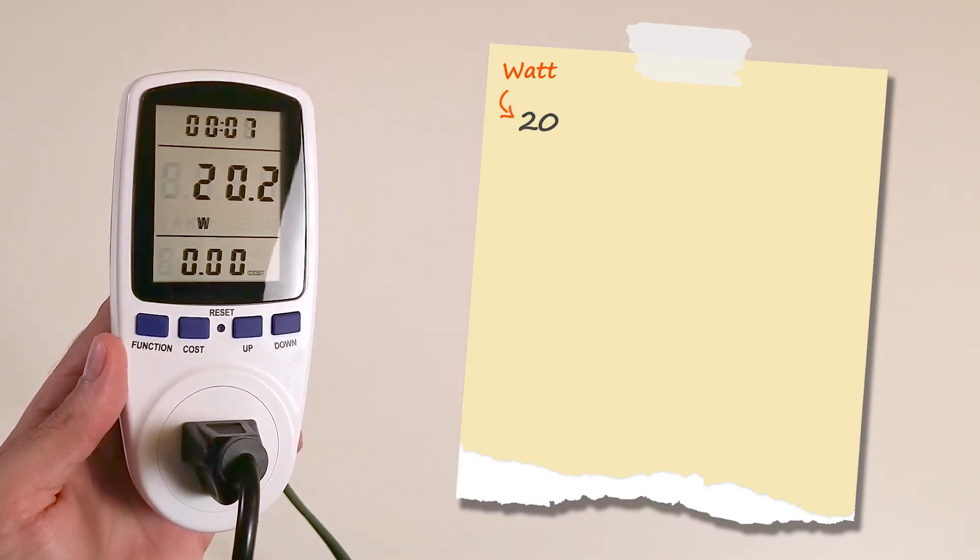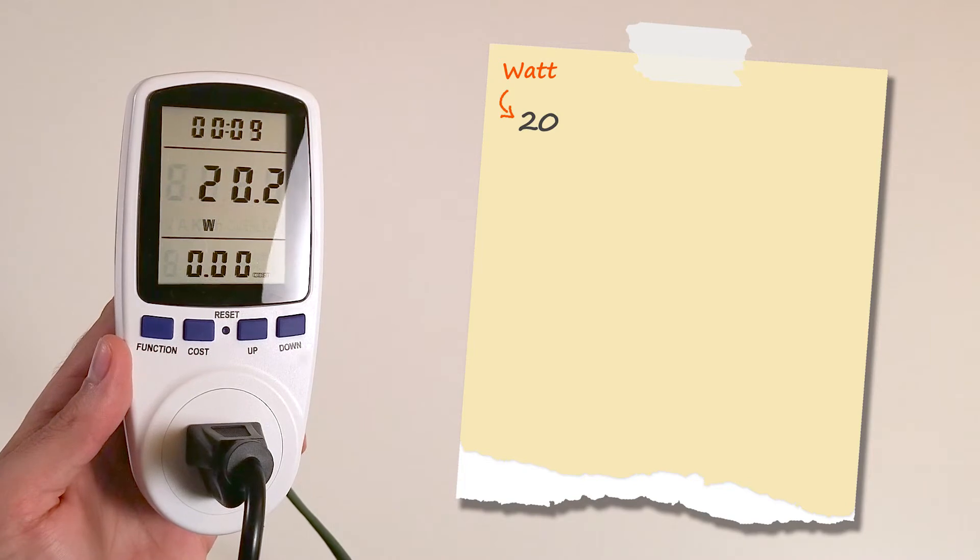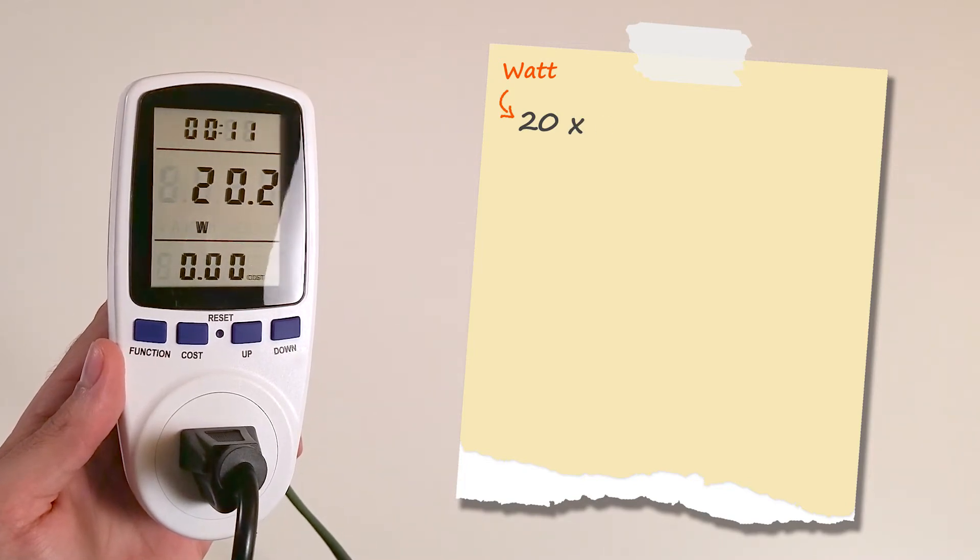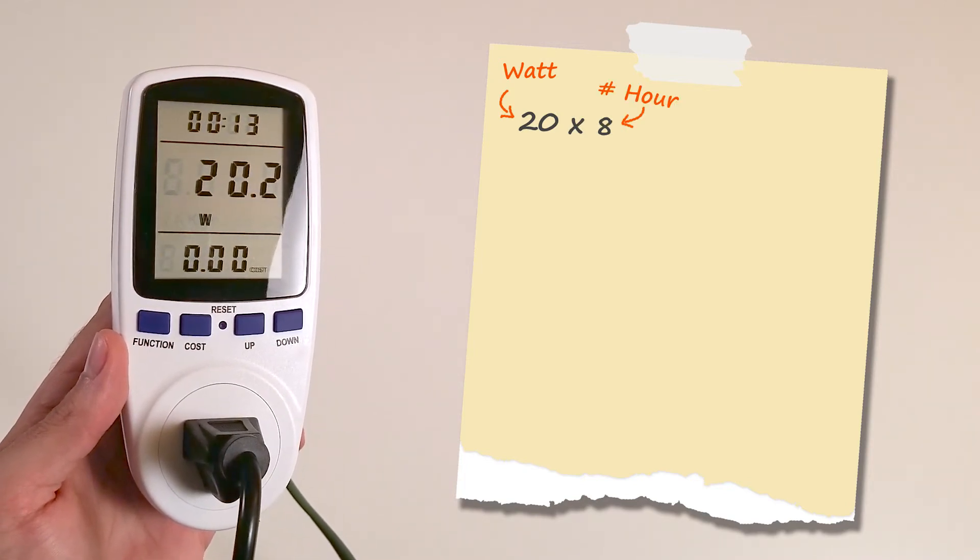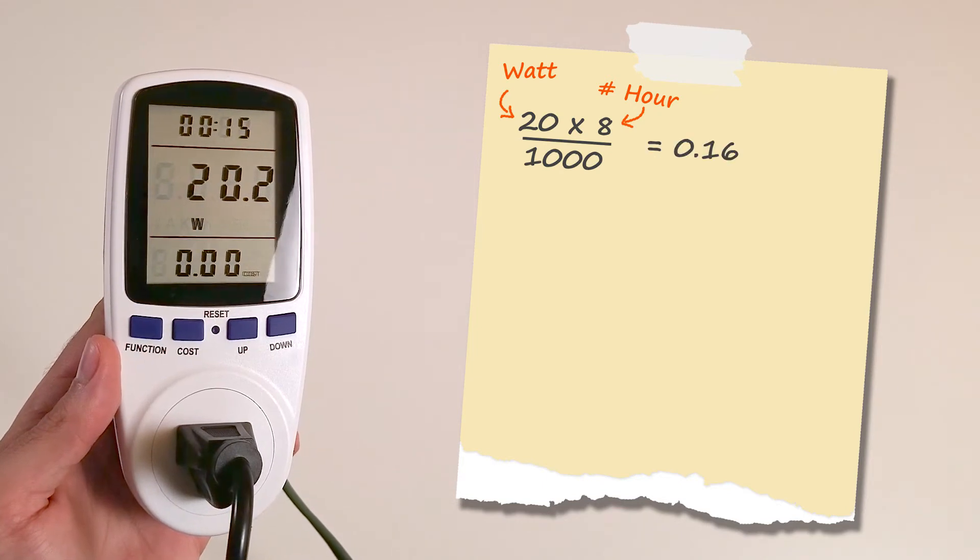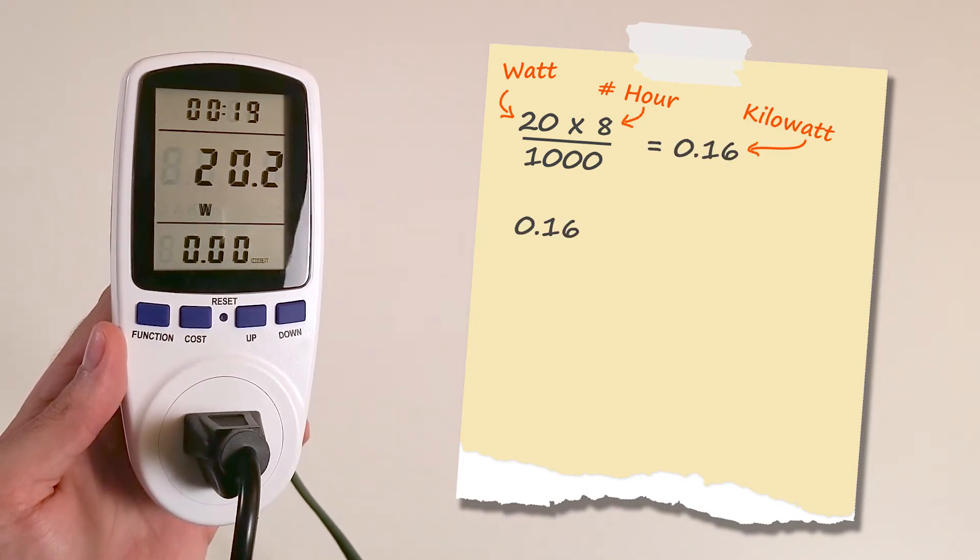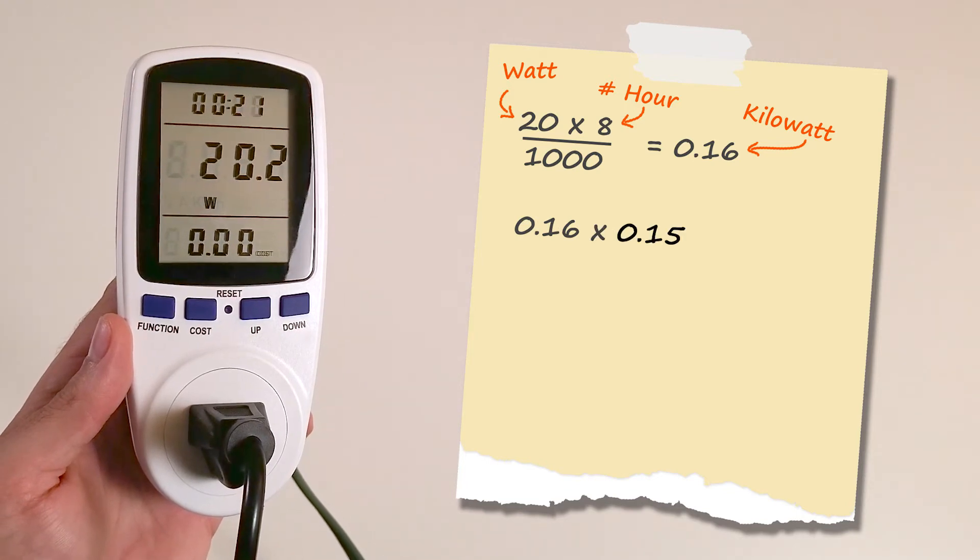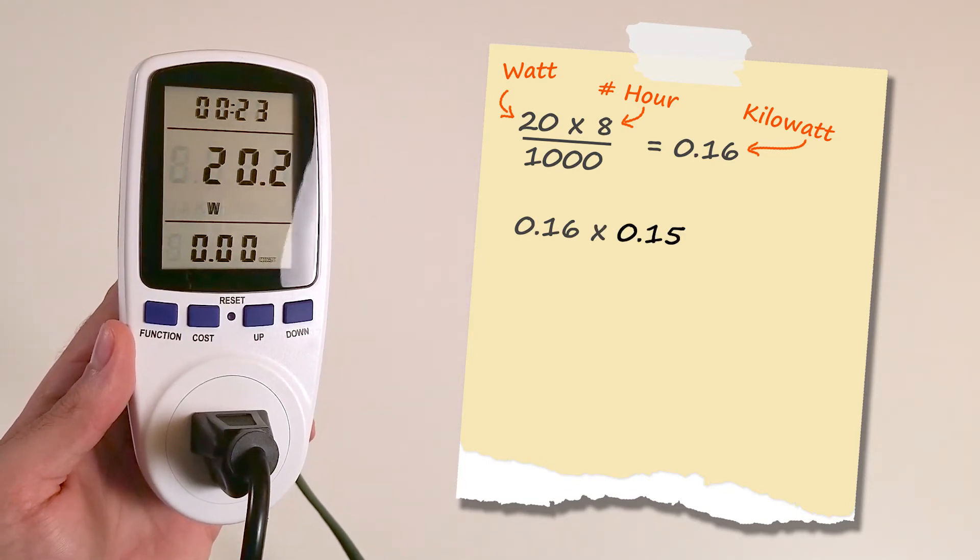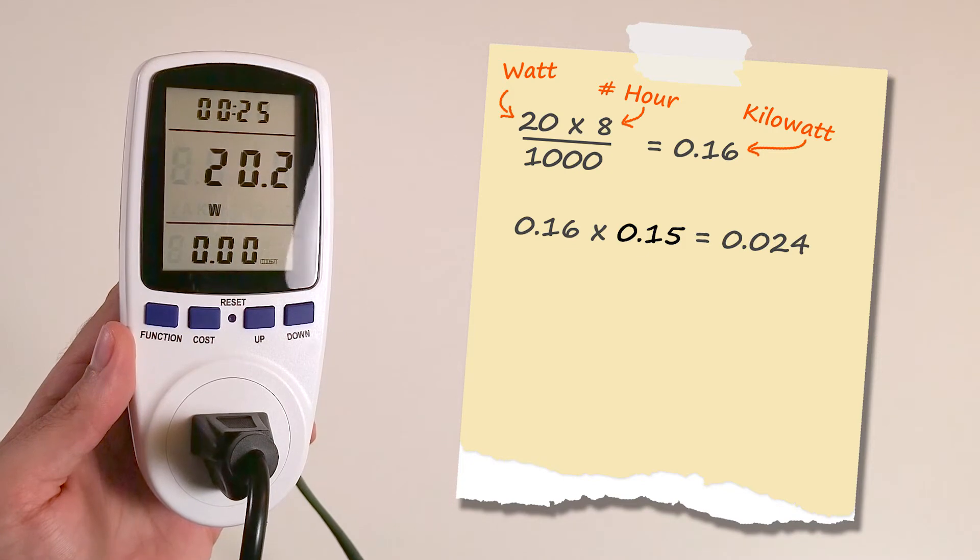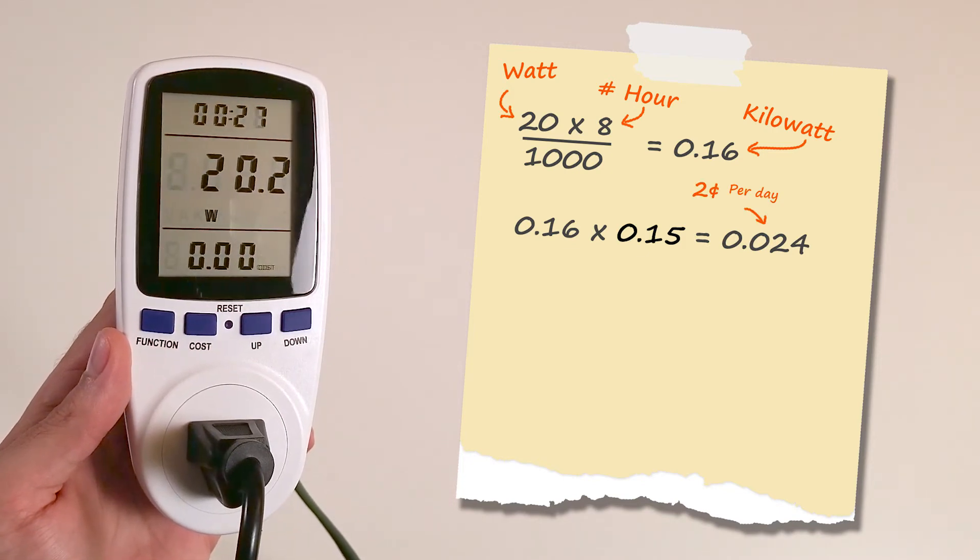You multiply this by the number of hours. Let's take an example: 8 hours. You divide this by 1000, equals 0.16 kilowatt. And then you take 0.16 kilowatt, multiply by 15, which is the average, equals 0.24. That means it costs 2 cents per day.